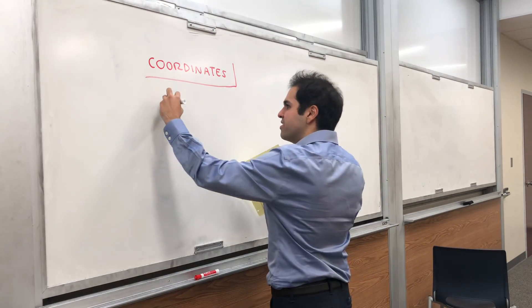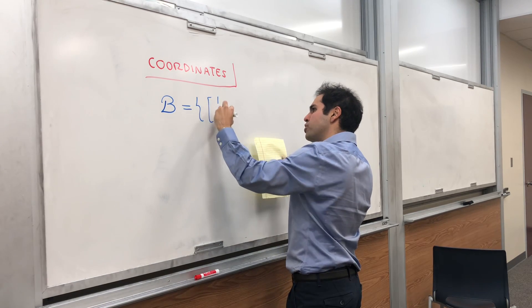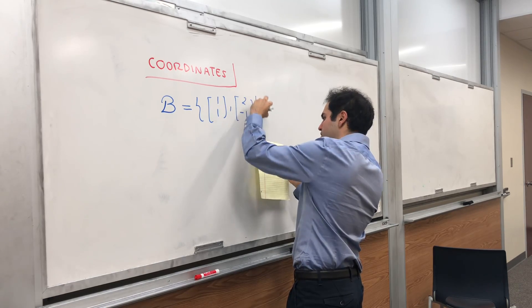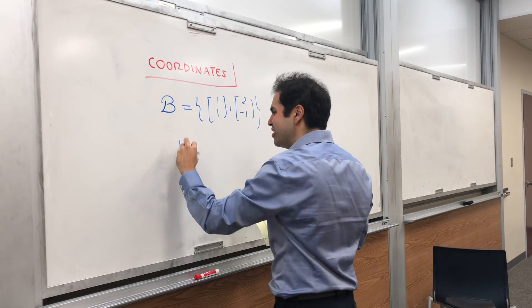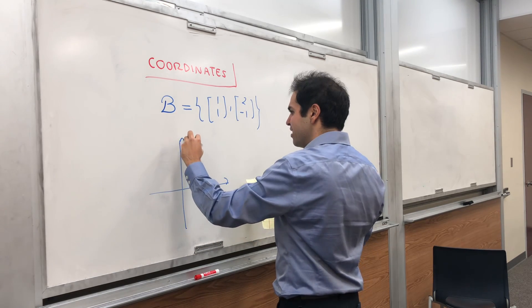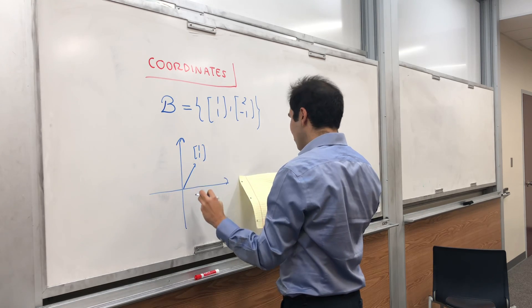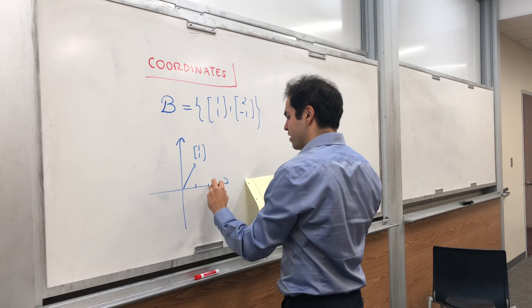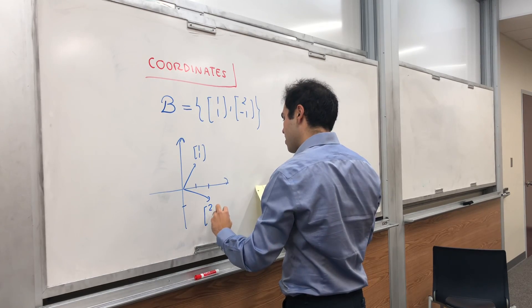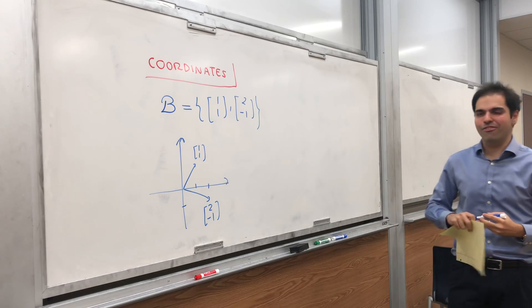So suppose you have a basis, let's call it B of R2, which is (1,1), (2,-1). Maybe let me draw this just so that later we can visualize what's going on. So we have the vector (1,1), and we have the vector (2,-1), maybe somewhere here. And suppose this is your new frame of reference.